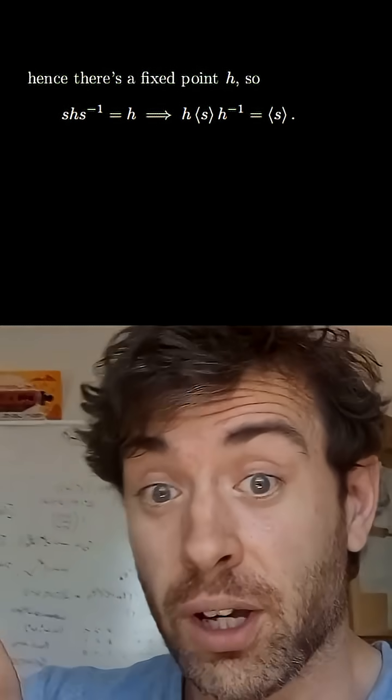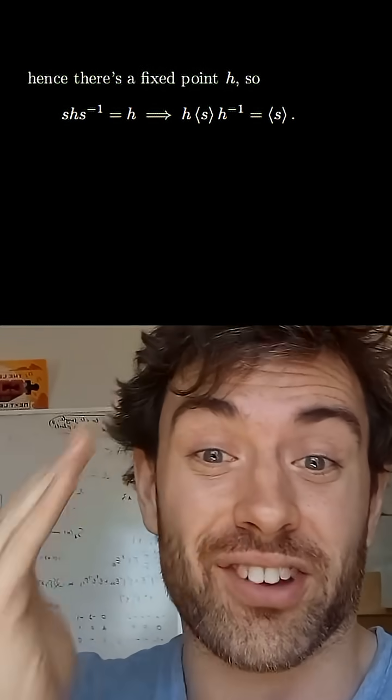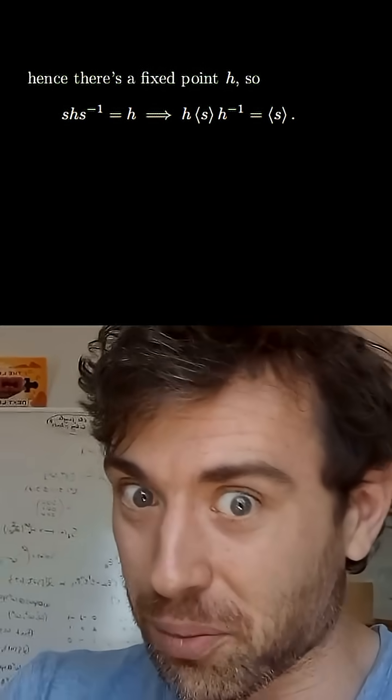So there's a fixed point h. But if h is a fixed point then conversely h fixes the group generated by s under conjugation, which is a Sylow 29 subgroup.